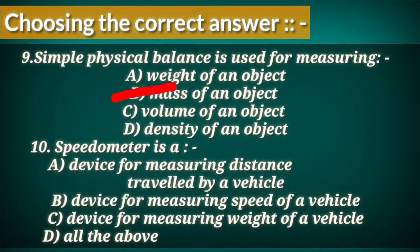Question 10: a speedometer is — A. A device for measuring distance traveled by a vehicle, B. A device for measuring speed of a vehicle, C. A device for measuring width of a vehicle, D. All of the above. The correct answer is C — device for measuring speed of a vehicle.